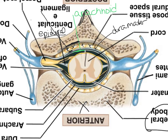Between the dura mater and the arachnoid mater there's another space called the subdural space. Normally that space isn't present - those two layers would be close together but not adhered. A space can be created if there's bleeding in there. If we get bleeding between those two layers, we call that a subdural hematoma because there's blood in between those spaces.